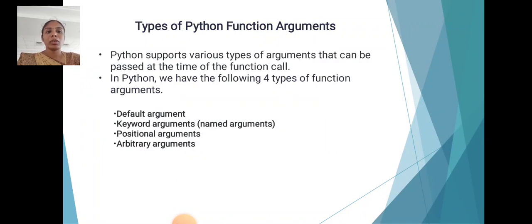Types of Python function arguments. Python supports various types of arguments that can be passed at the time of function call. In Python, we have the following four types of function arguments: default arguments, keyword arguments, positional arguments, and arbitrary arguments.